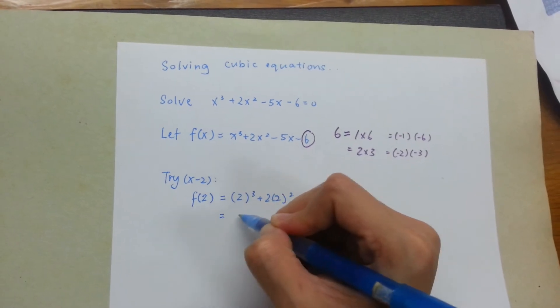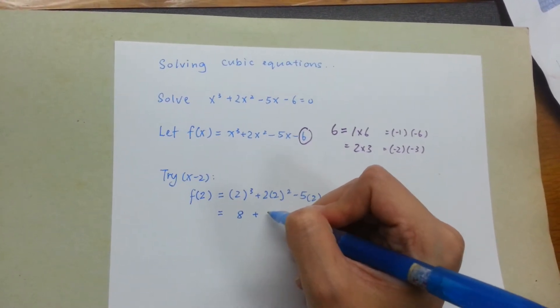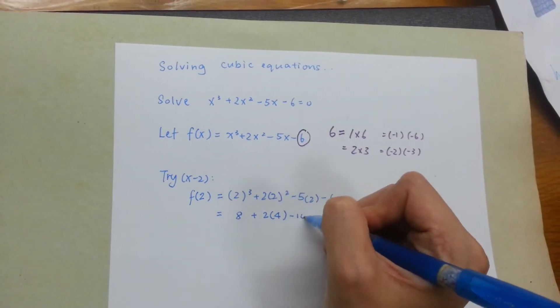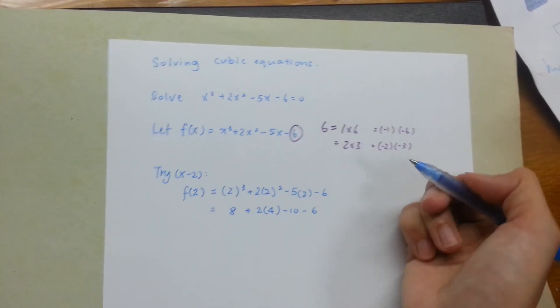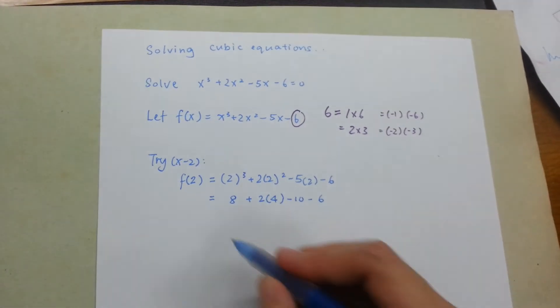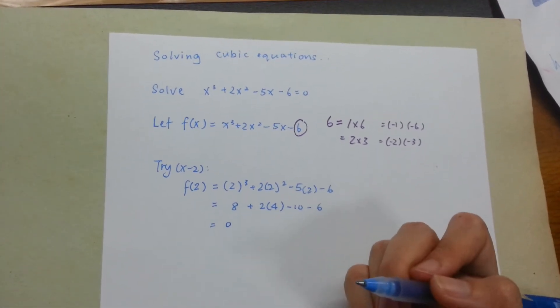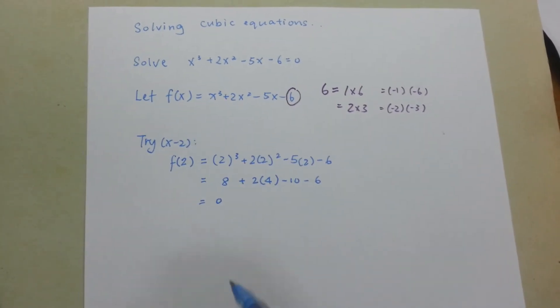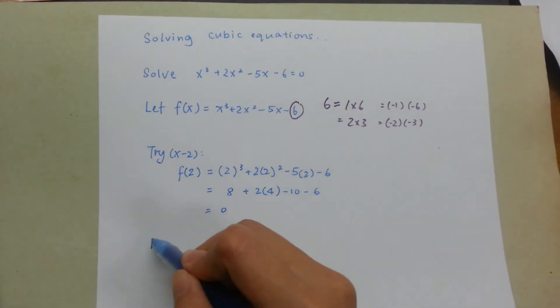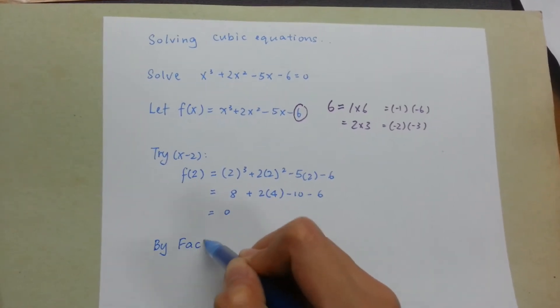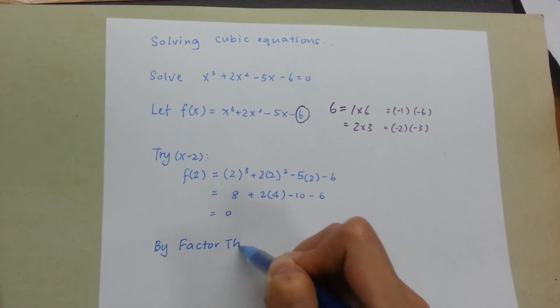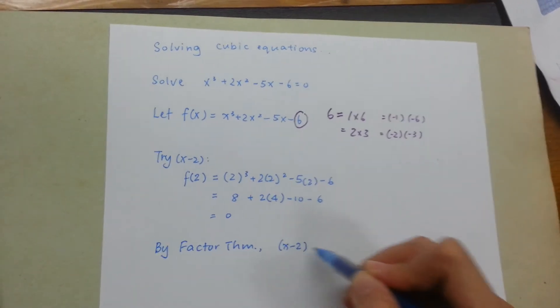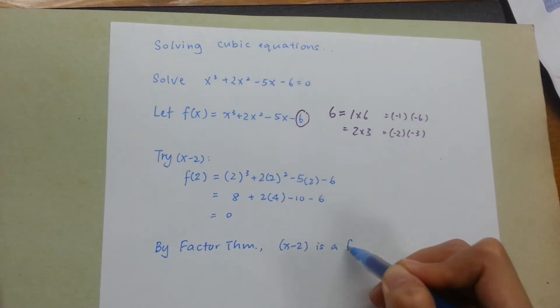If I work them out slowly, I'll get this, and you should get 0. When you're able to find an x value that gives you 0, you can use factor theorem. So you say, by factor theorem, x-2 is a factor of f(x).